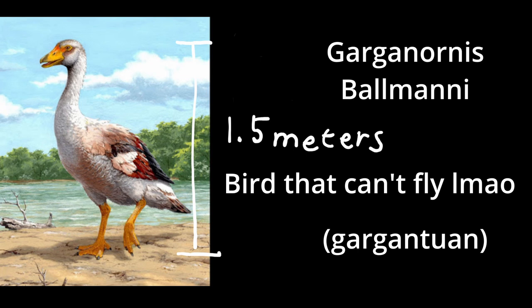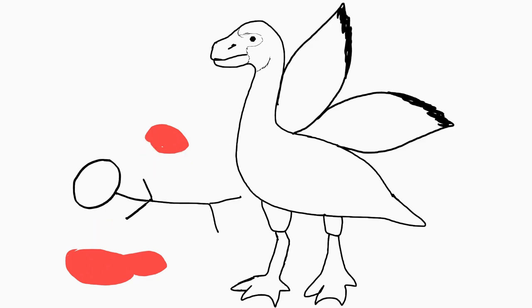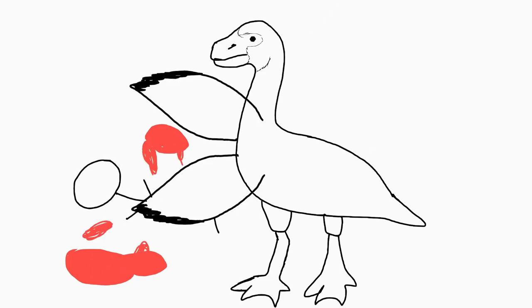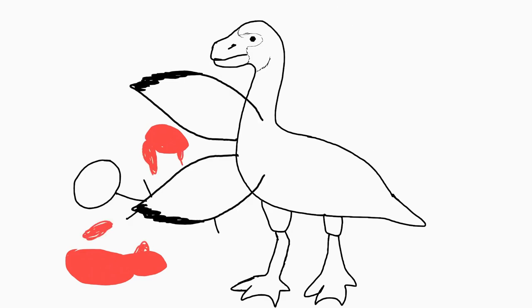The Garganornis baumani stood at a whopping 1.5 meters tall, and this gargantuan goose was flightless. Rather than using its wings for flying, it decided to use its wings to pummel the ever-loving shit out of any predator that dares to prey on them. But fortunately for the Canadians, they went extinct a long time ago, so no need to worry about your children being mauled by a giant goose. Now, onto some facts about geese behaviors.